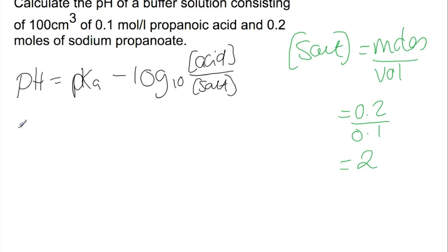So putting these values into the equation we'll have pH equals 4.87, that's the pKa of propanoic acid, minus log to the base 10 of 0.1 divided by 2, which gives you a buffer pH of 6.17.